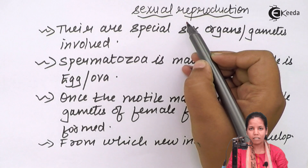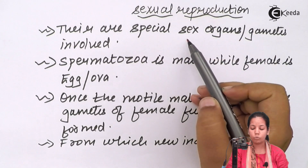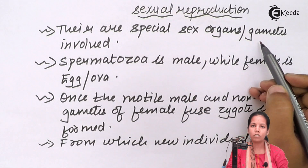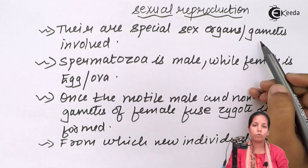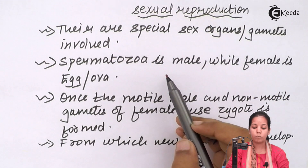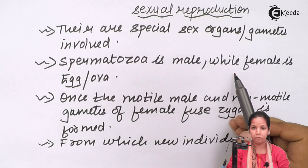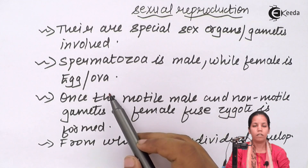During sexual reproduction, there are special cells called gametes that are produced inside the reproductive organs, irrespective of whether male or female. Spermatozoa are produced in the testes in males, while in females the egg cell is produced in the female reproductive tract.